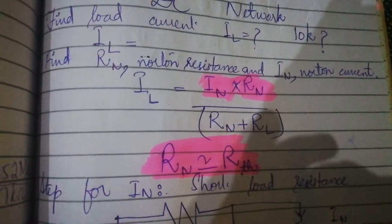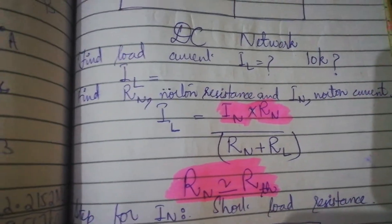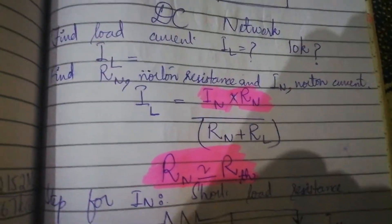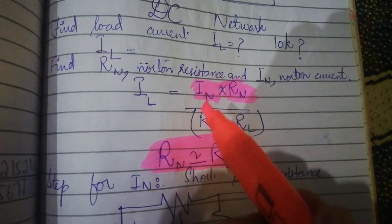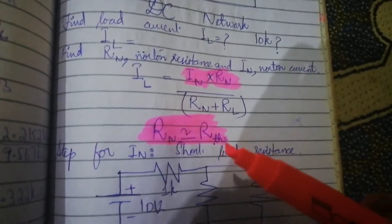We need to find out two things: Norton resistance and Norton current. The calculation of Norton resistance is exactly the same. Next we need to find out the Norton current.